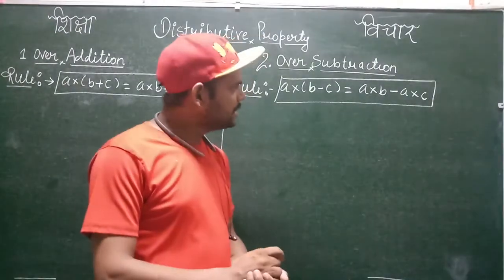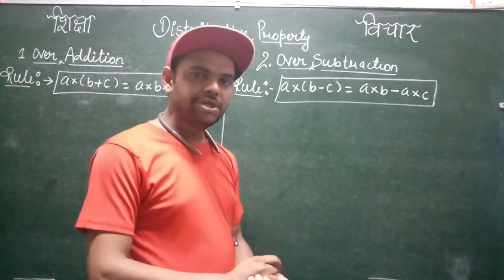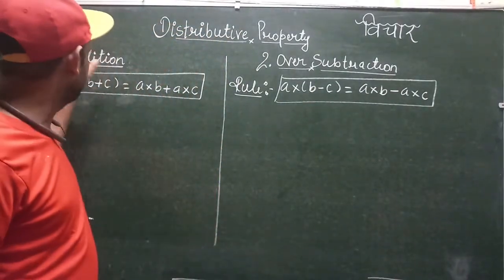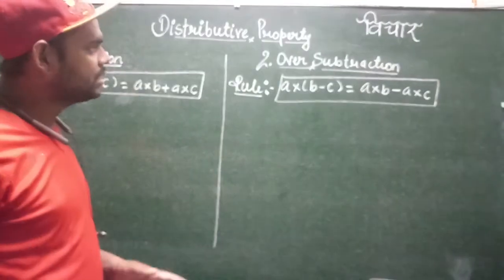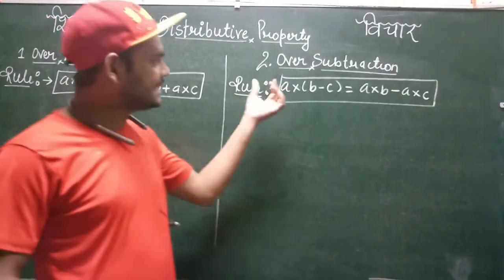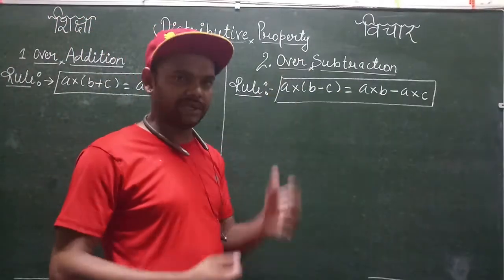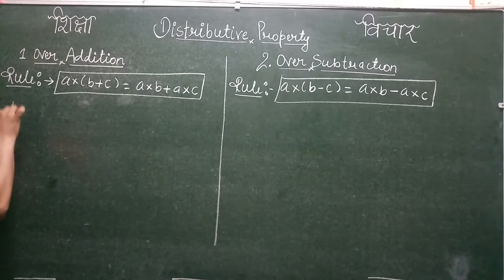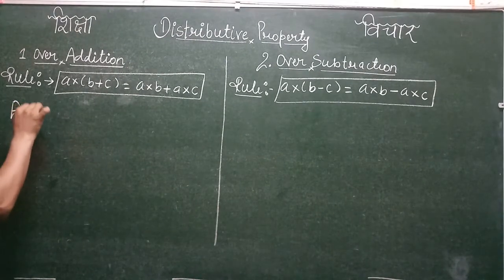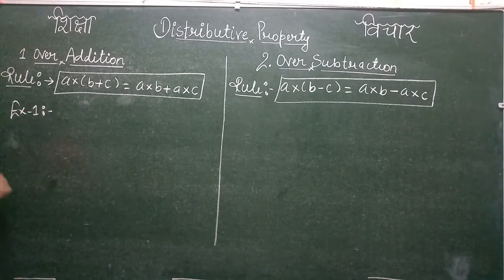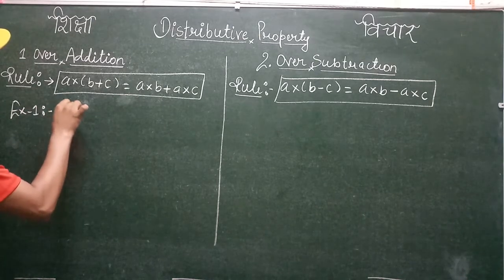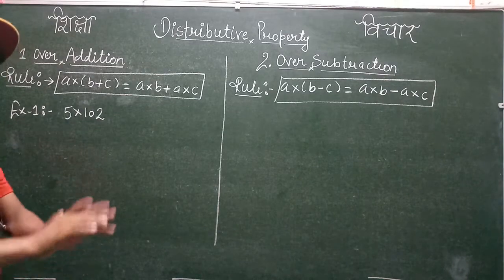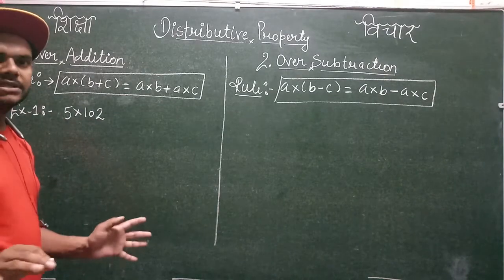Now we will see how this property is applied in questions. We will solve two examples: the first one for the case of addition and the second one to illustrate subtraction. Example one: suppose that we want to multiply 5 by 102. We can normally multiply this easily.